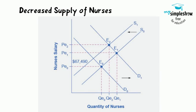Decreased supply of nurses. The increase in demand for nurses leads to both higher prices and higher quantities demanded. As nurses retire from the workforce, the supply of nurses decreases, causing a leftward shift in the supply curve and higher salaries for nurses at P2. The net effect on the equilibrium quantity of nurses is uncertain, which in this representation is less than Q1, but more than the initial Q0.